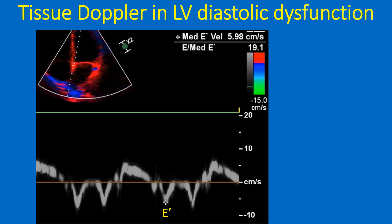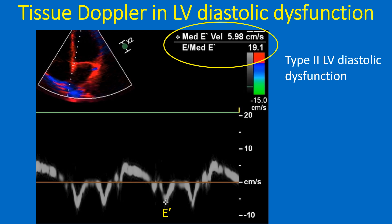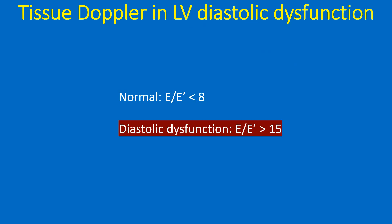Tissue Doppler imaging with color kinesis in the inset is shown. E by E prime of the medial mitral annulus is shown as 19.1, indicating Type 2 left ventricular diastolic dysfunction. In diastolic dysfunction, as ventricular relaxation is impaired, the velocity of the medial mitral annulus is reduced and the E by E prime ratio is increased. E wave is measured prior to tissue Doppler imaging and stored so that the software displays E by E prime as soon as E prime is measured. E by E prime below 8 is considered normal, while a ratio above 15 indicates left ventricular diastolic dysfunction. E by E prime has also been correlated with left atrial pressure — effectively the left ventricular filling pressure — which increases in diastolic dysfunction.